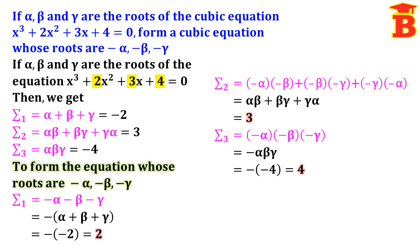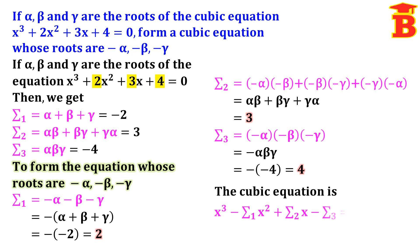Now we have sigma 1, sigma 2, sigma 3, so we can form the cubic equation: x cubed minus sigma 1 times x squared plus sigma 2 times x minus sigma 3 equal to 0. Substituting: x cubed minus 2x squared plus 3x minus 4 equal to 0. That is the answer. Thanks for watching.